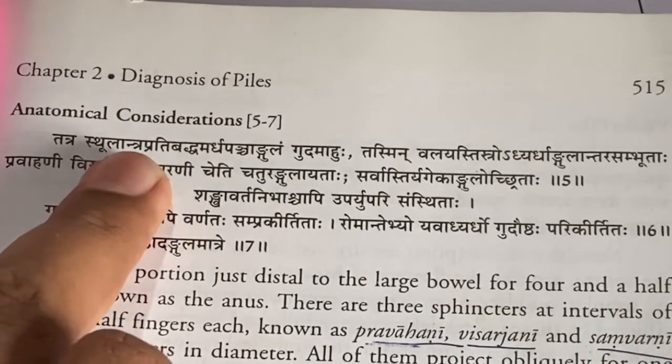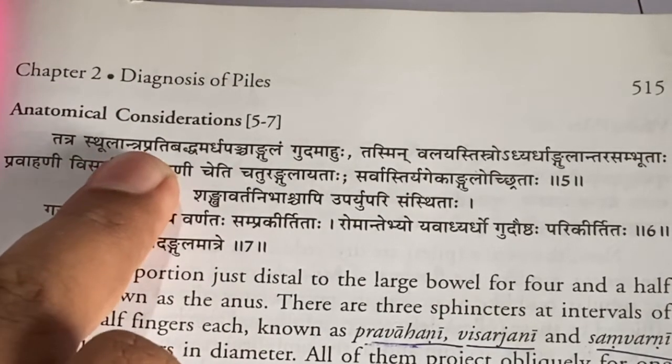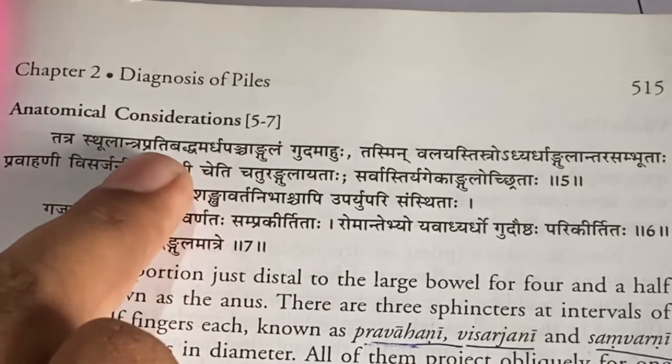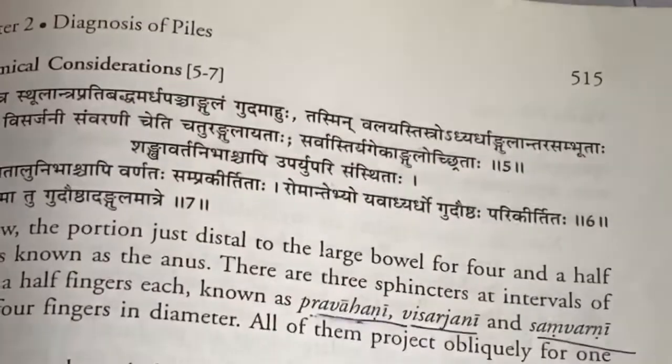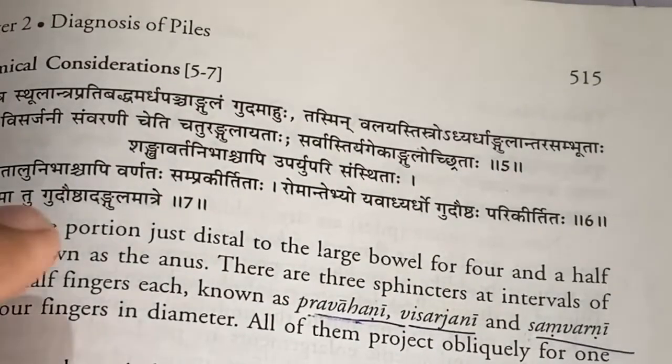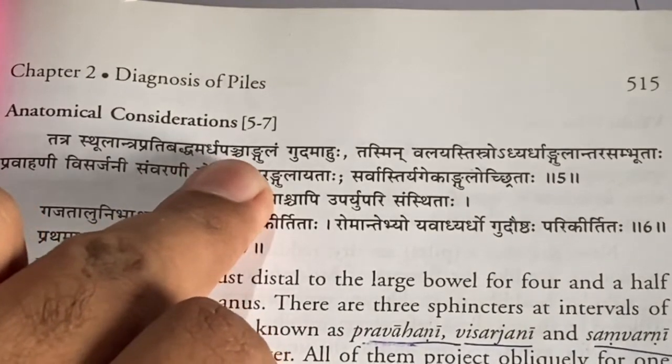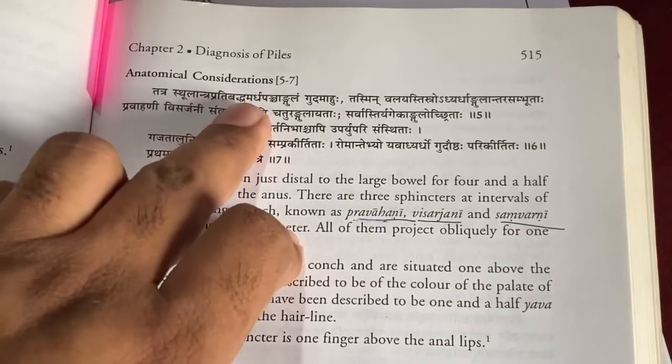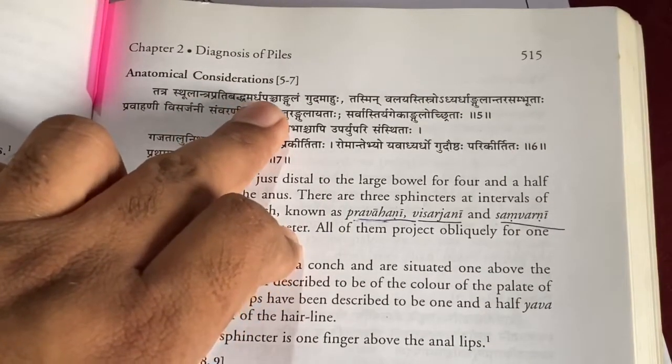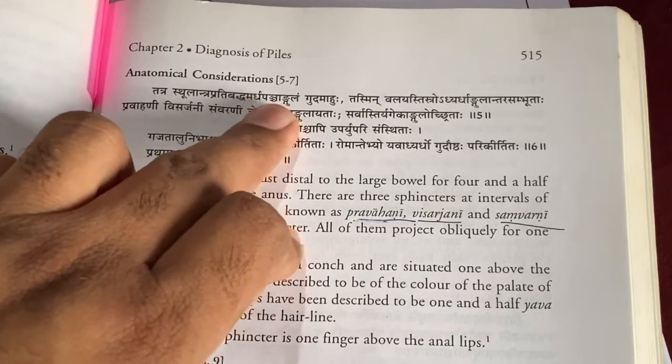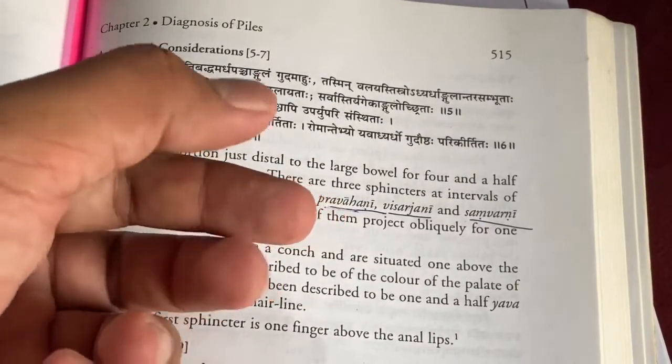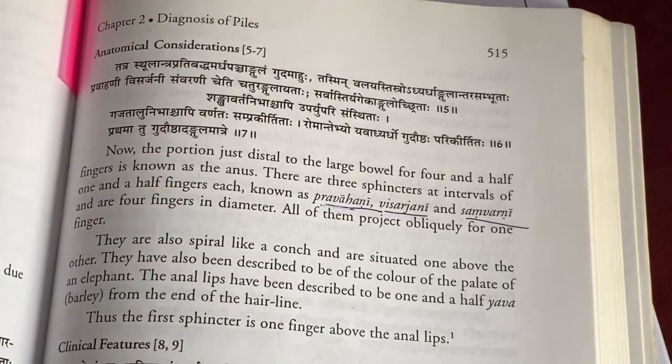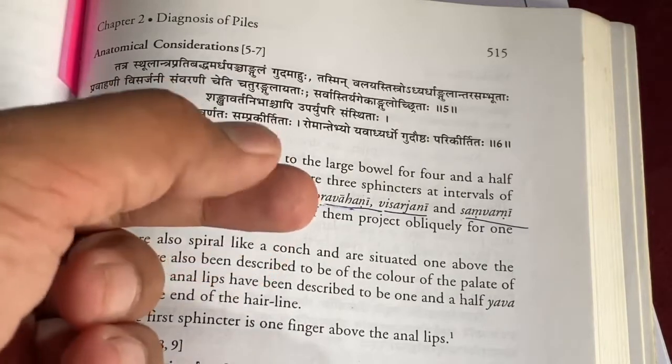What he says is written in Sanskrit, which was told nearly about 5000 years back. Tatra stula antra—stula means large, antra means intestine. Prativaddha artha panchamangulaha. So what he says: at the distal part of the large intestine, it is of 4.5 angula.